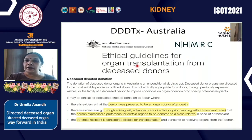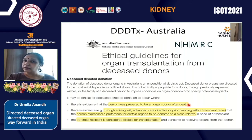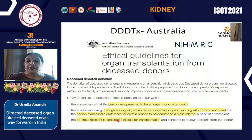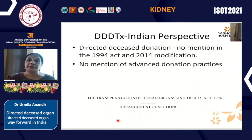Australia also has guidelines for directed deceased donor transplant programs. There should be evidence that the donor was prepared to be an organ donor, and some form of direction — either through a living will, an advanced care directive, or prior planning with the transplant team — that upon the person's death the organ should be given to a close relative. The potential recipient should be eligible for transplantation.